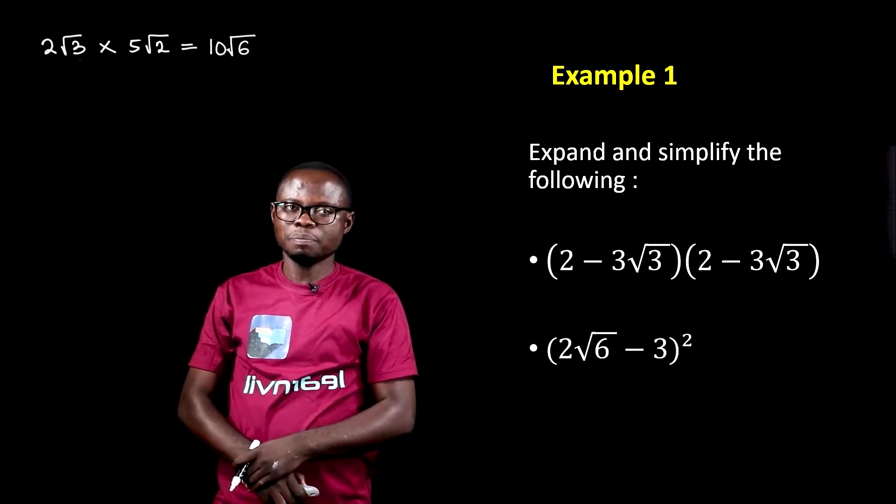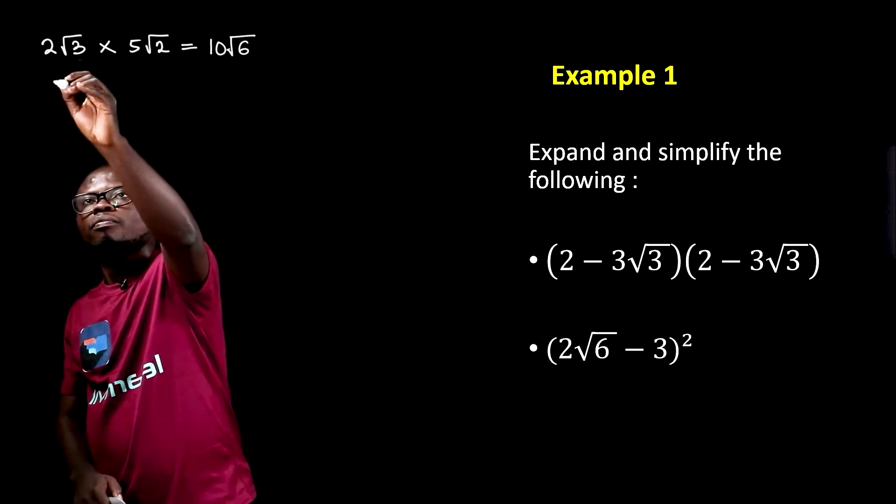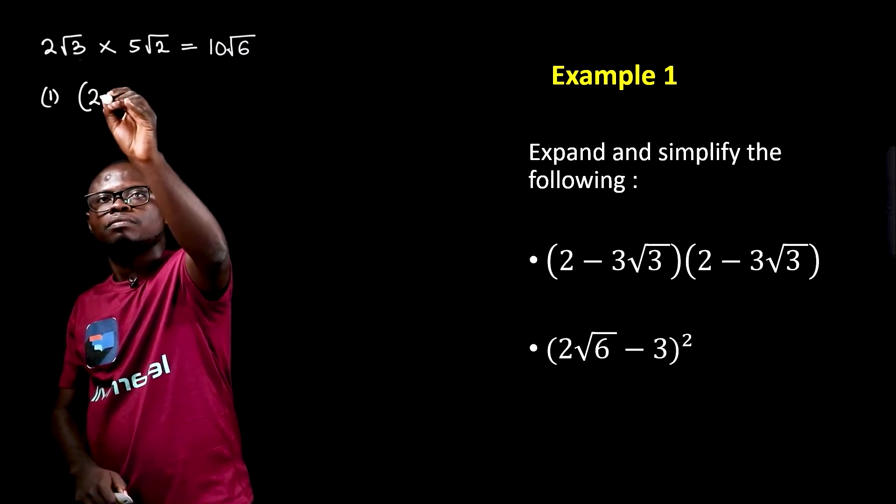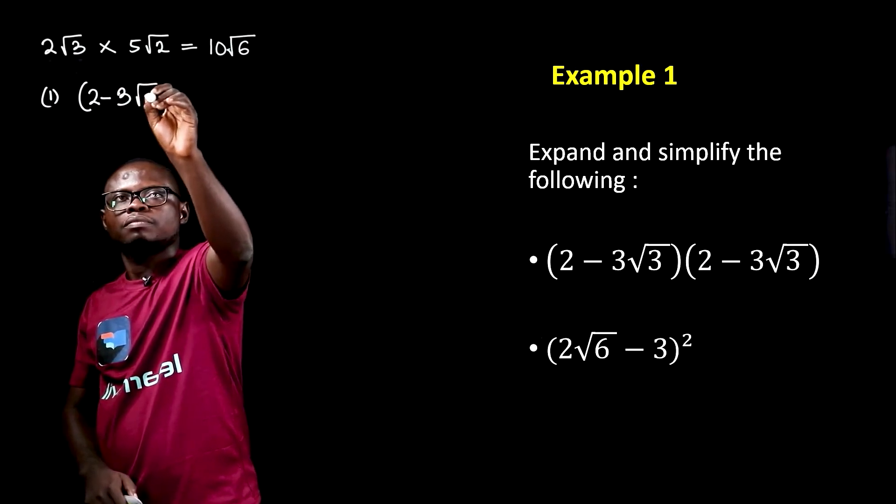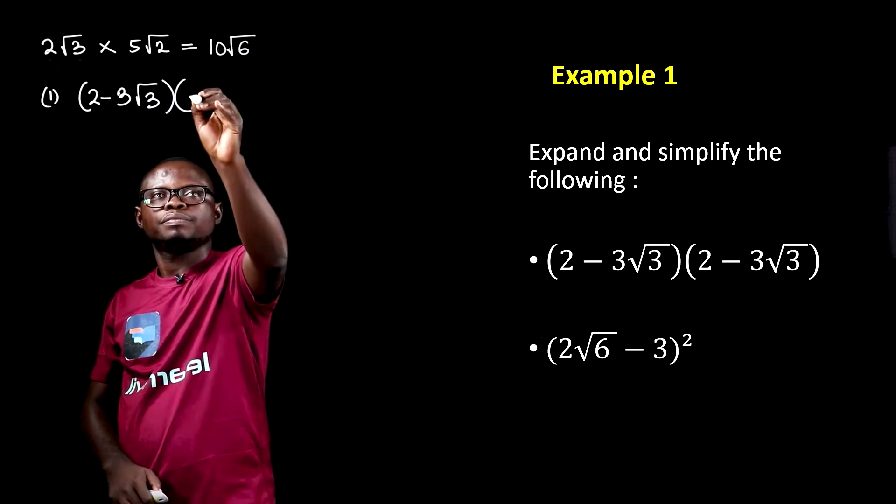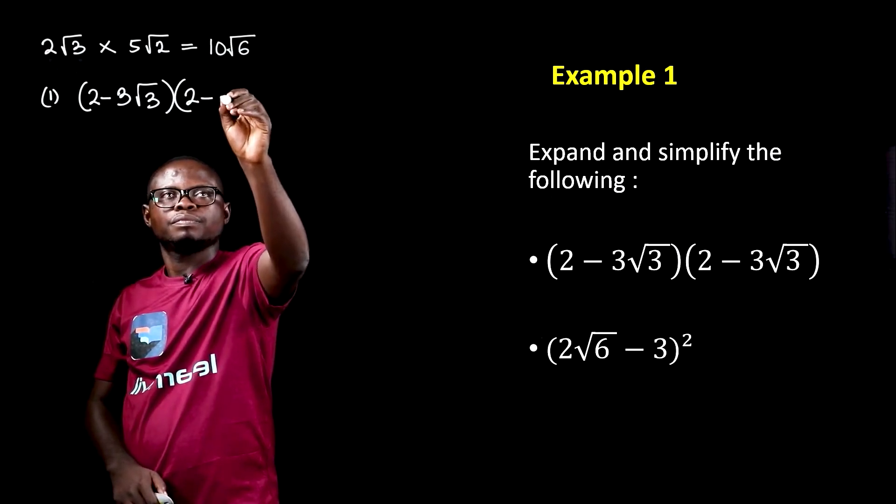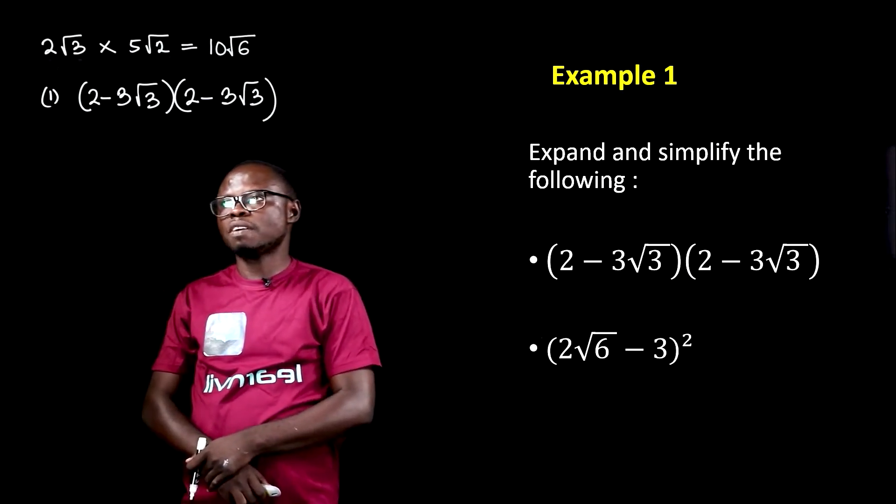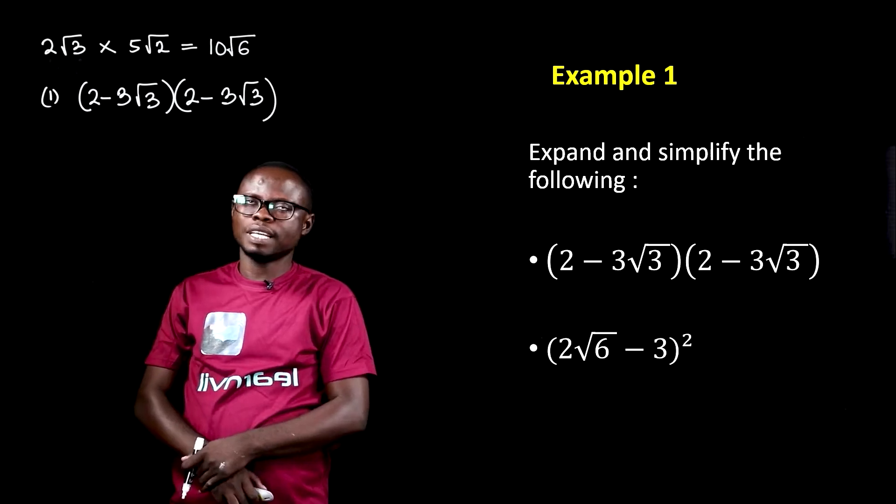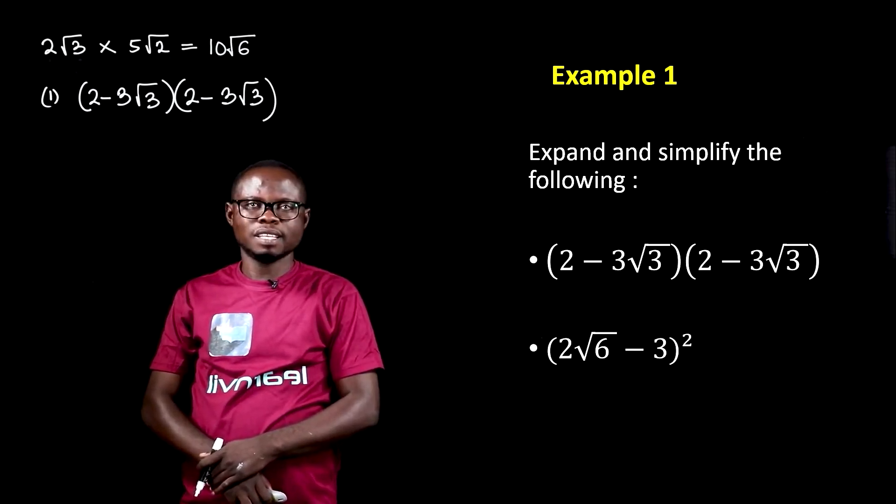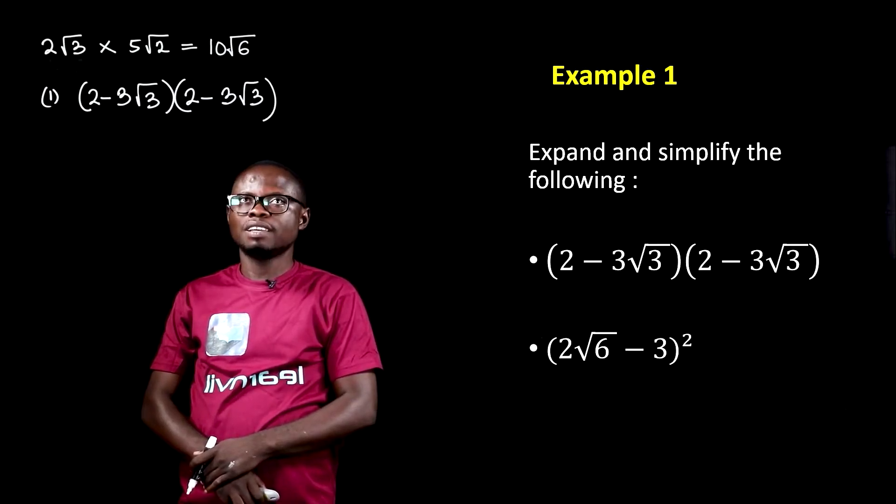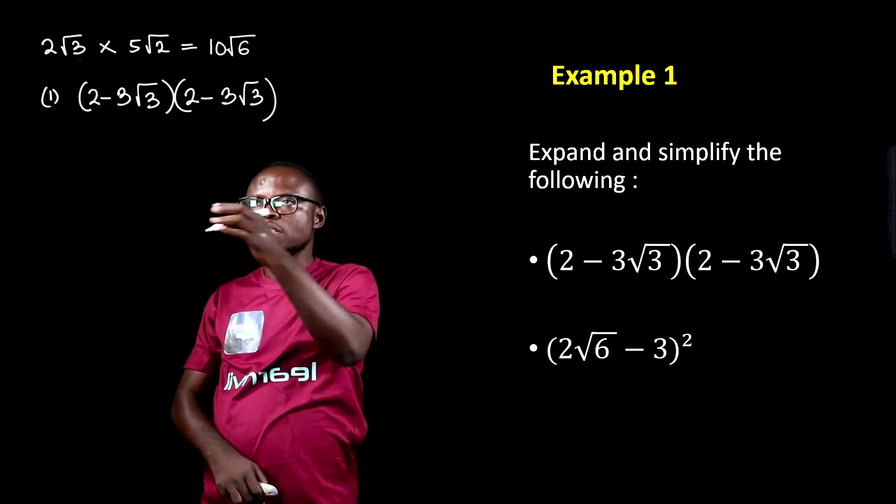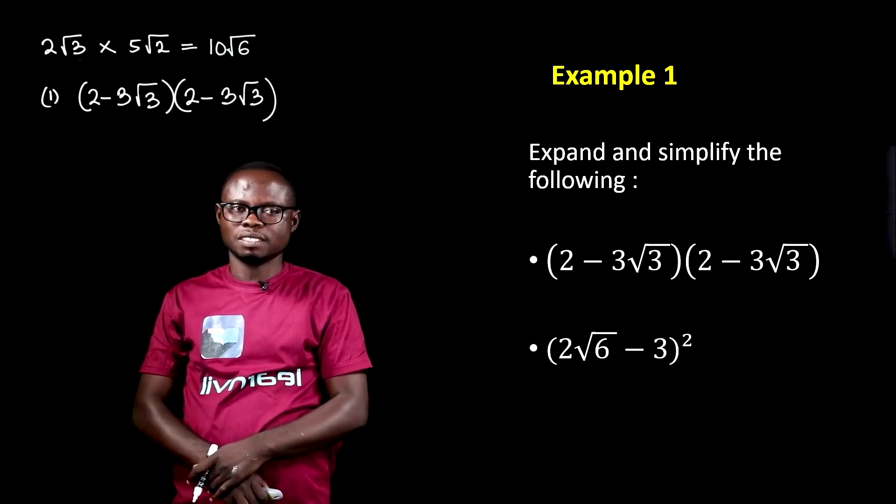Let's look at this example. In the first bracket, we have 2 minus 3 root 3. Now, to multiply this, we need to first expand the brackets.